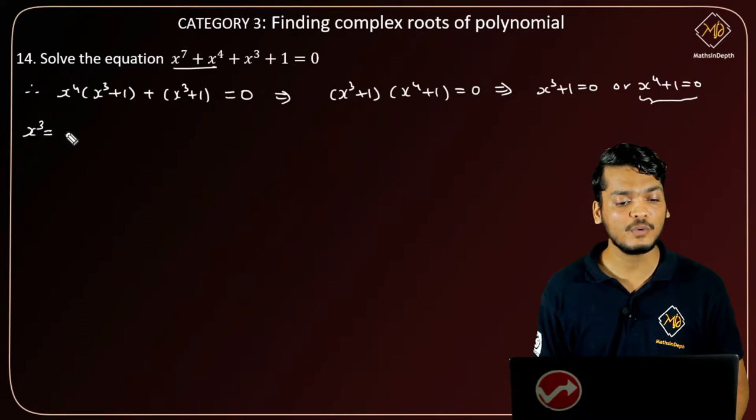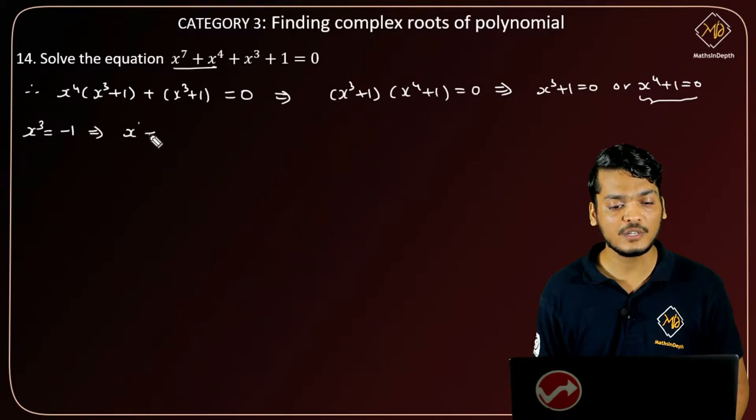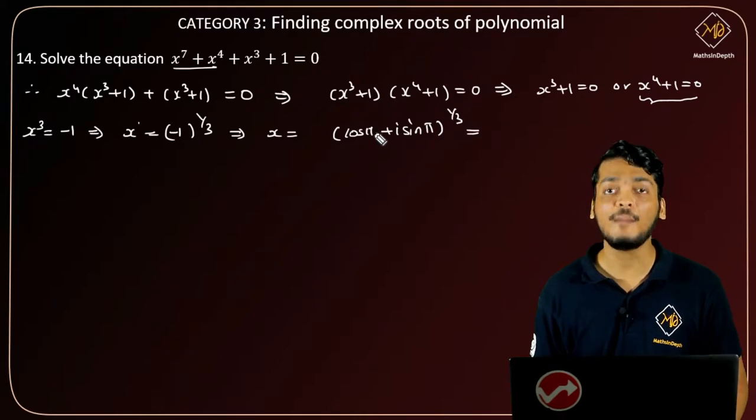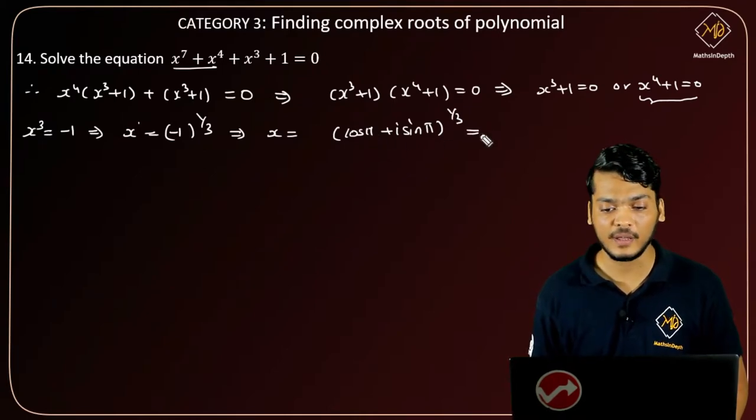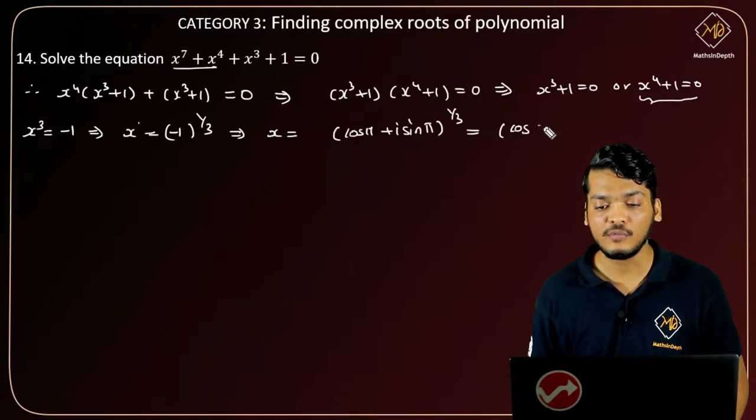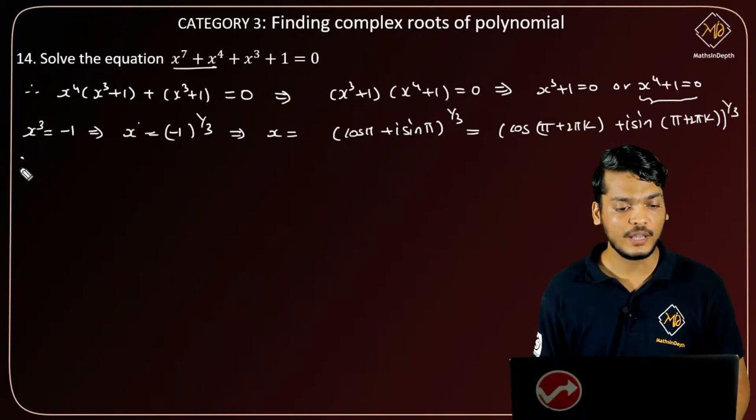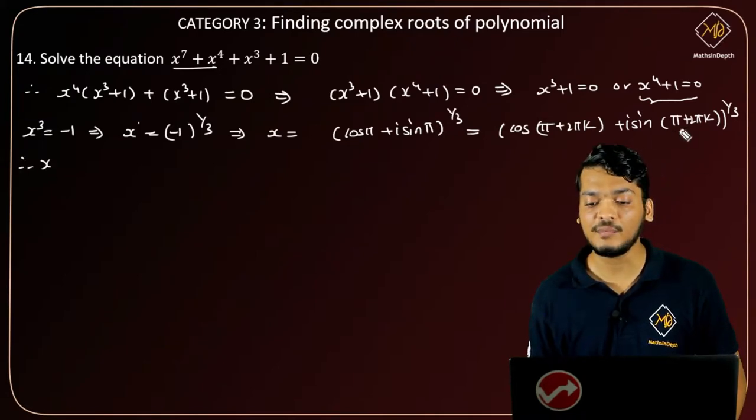From this particular equation, x cube equals to minus 1. This implies that x equals to minus 1 raise to 1 by 3. This implies that x equals to, now minus 1 can be written as cos pi plus i sine pi, raised to 1 by 3. Now I'll generalize by adding 2 pi k to angle pi, so I will get cos of pi plus 2 pi k plus i times sine of pi plus 2 pi k, raised to 1 by 3.